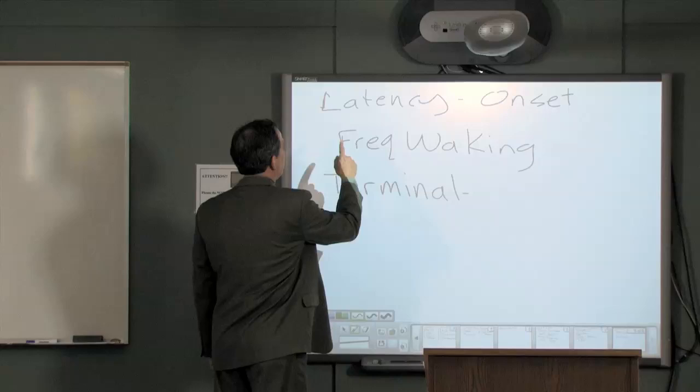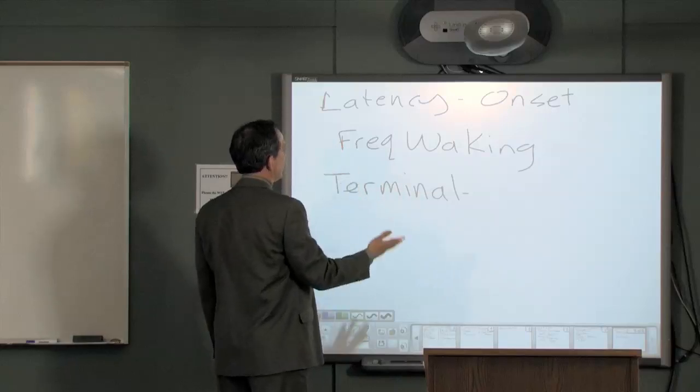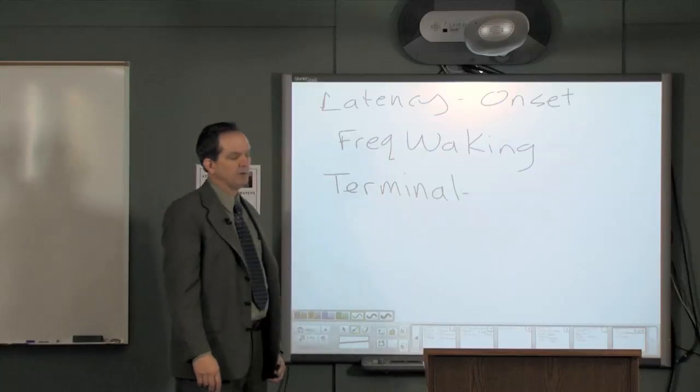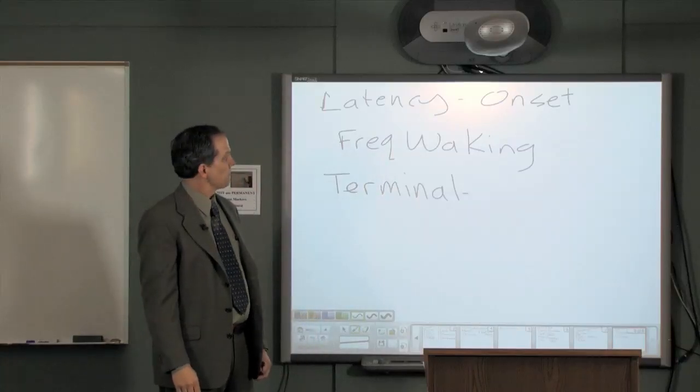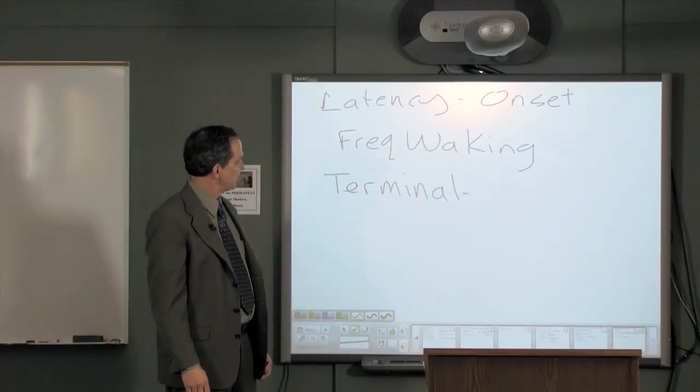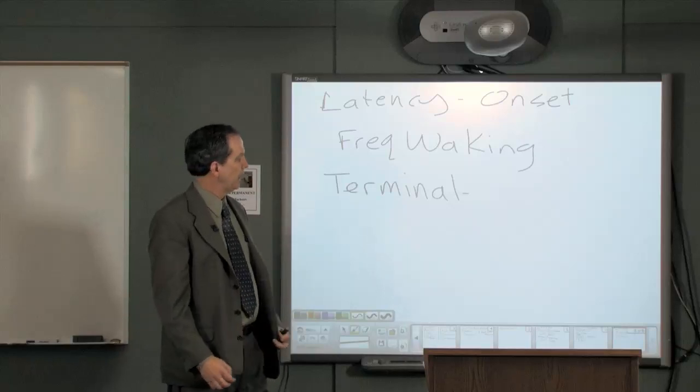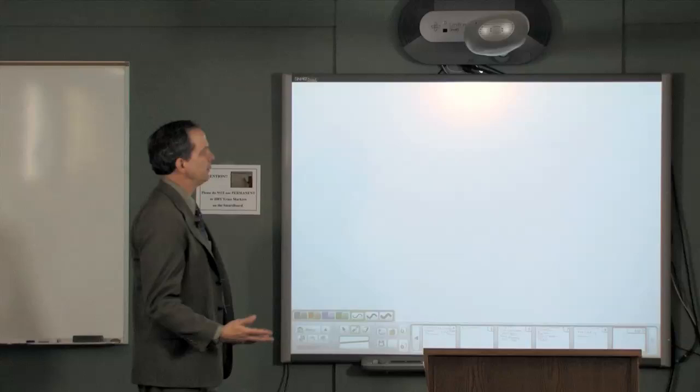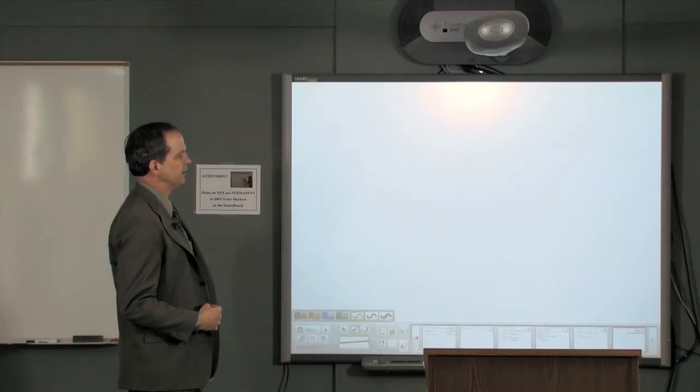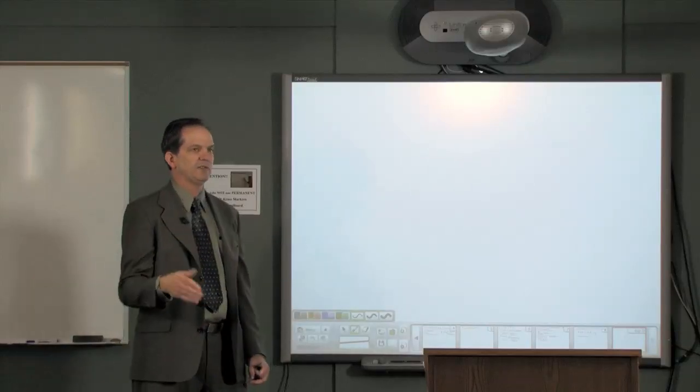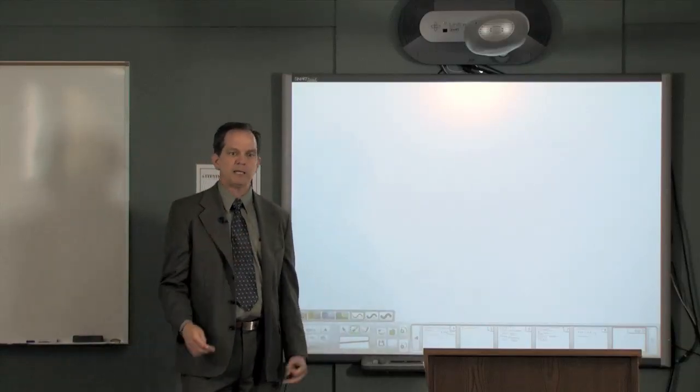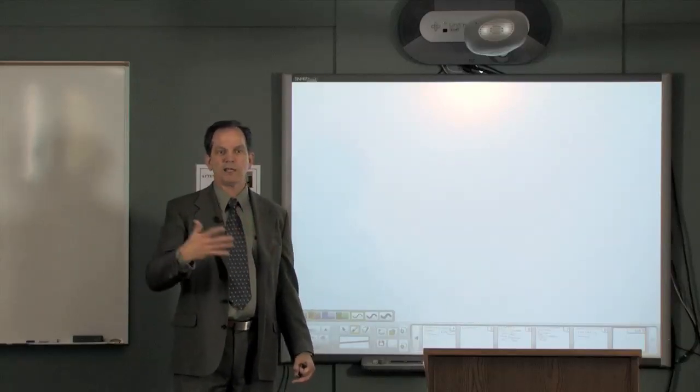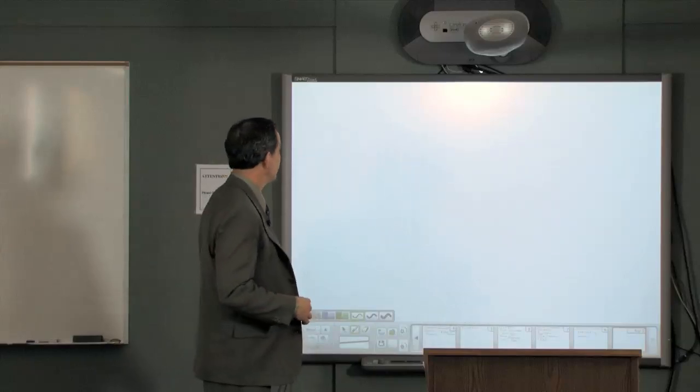So those three areas, onset, during the night, and then terminal at the end of sleep, is how to evaluate it. Typically, if people cannot fall asleep, that's probably the easiest to treat or at least most direct to treat. Because if you give something that makes them sleepy at the beginning of the night, they're more likely to fall asleep. And then once they are soundly asleep, they're more likely to sleep through the night.